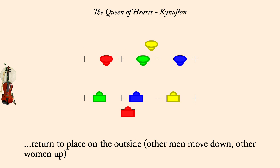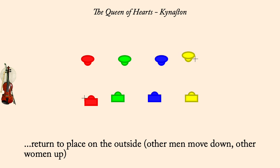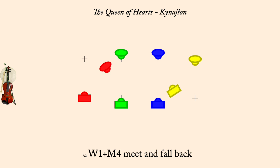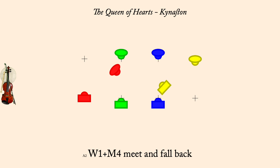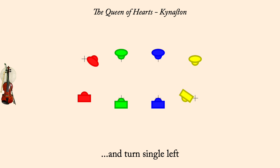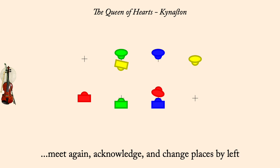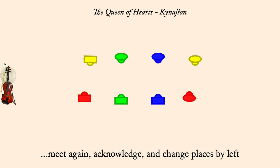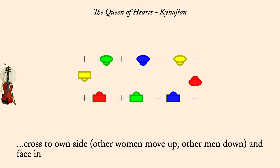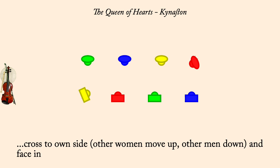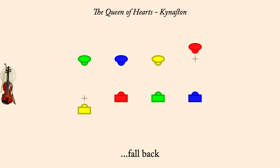Woman one, man four: meet and fall back. And turn single left. Meet again and change by left. Cross to own side, others make room. Fall back. Return to place, others make room.